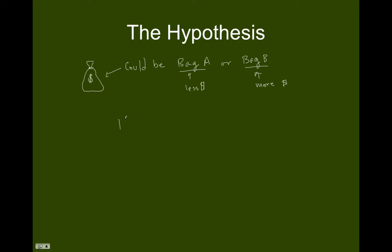From this we could create a statistical hypothesis. Since there are two possibilities for this bag — it could be bag A or bag B — these are our two possibilities, and notice this forms a dichotomy. These two things cannot both be true. The bag is either bag A or the bag is bag B.